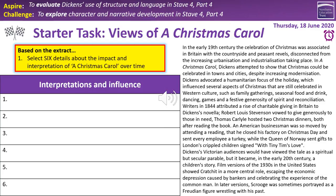There's the rise of charitable giving in Britain — that's a detail you could have from 1844. You've got some specific examples of that: Robert Louis Stevenson vowing to give generosity to those in need; Thomas Carlyle hosting two Christmas dinners after reading the book. You've got the American businessman — this wonderful little anecdote about him being so moved by attending a reading that he closes his factory and sent every employee a turkey. The Queen of Norway sending gifts to London's crippled children, signed with love, telling Tim's love — that's a nice one as well.